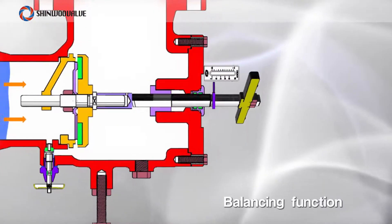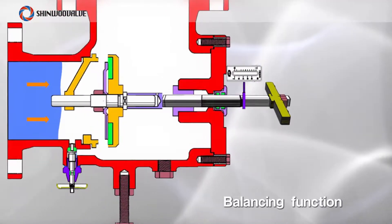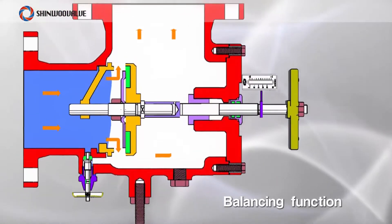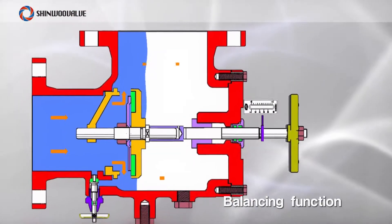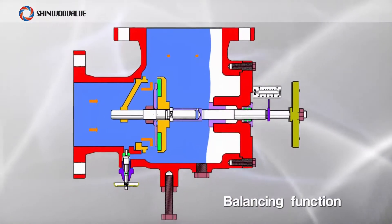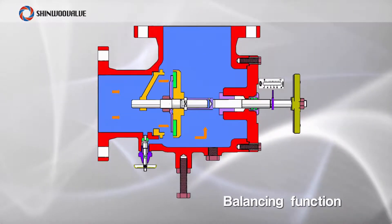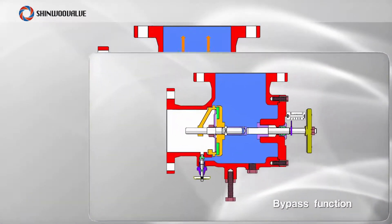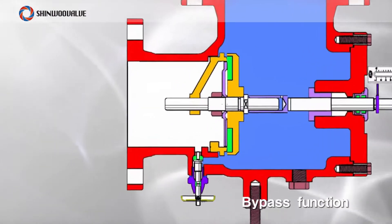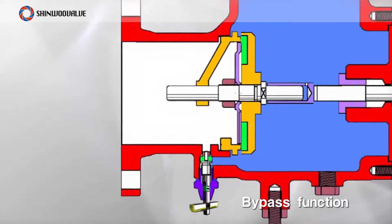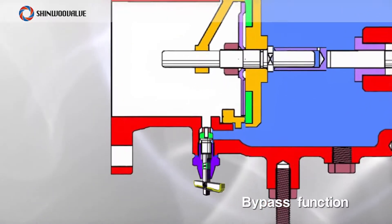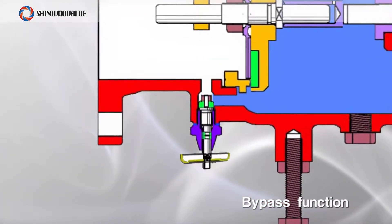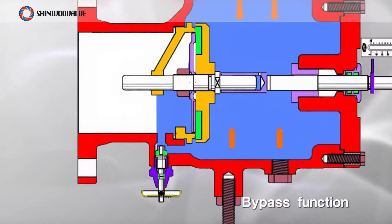Using the balance function, flow can be adjusted through the indicator by controlling the desk. It is also possible to induce fluid flow to the pump by opening the bypass valve when a vacuum effect occurs in the pump with the bypass function.